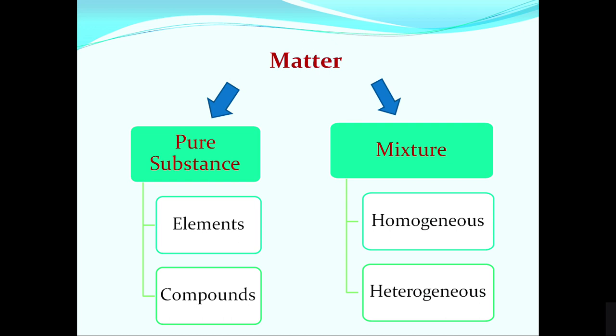Mixtures can be of two types: homogeneous or heterogeneous. In a homogeneous mixture, all components are uniformly mixed — we cannot identify different components at different places; they have a uniform ratio throughout. A heterogeneous mixture has visible particles or different composition at different places. For example, soil is heterogeneous. But when we dissolve a spoon of sugar in a glass of water, we get a homogeneous mixture — it tastes equally sweet throughout.